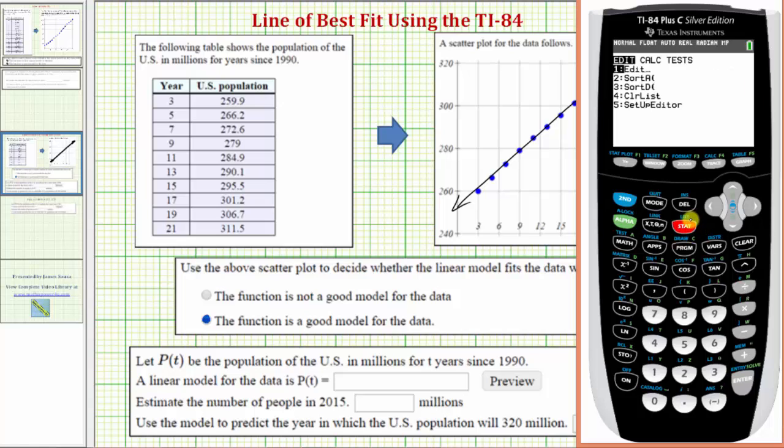Press stat, right arrow to calculate, option four for linear regression, and we'll have the same settings. If we do want to store the regression equation in one of the Y variables, we can press vars, right arrow, enter, enter for Y1. Of course, this step is optional. Enter, and then on calculate, press enter again.